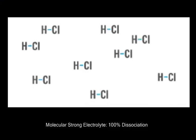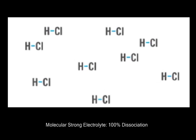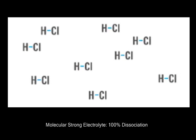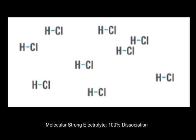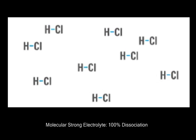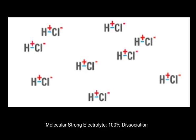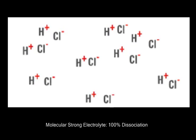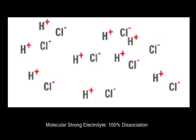A strong electrolyte is a compound that ionizes completely in solution. Hydrogen chloride breaks into hydrogen and chlorine ions.